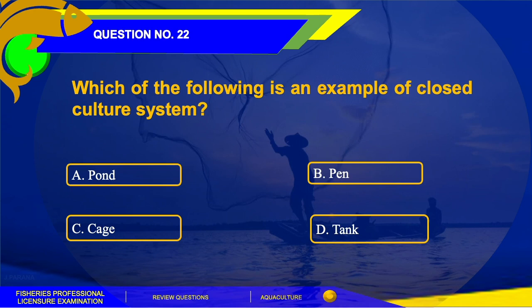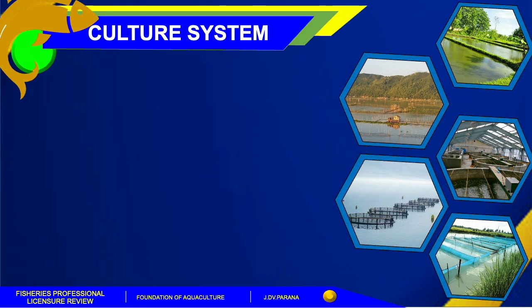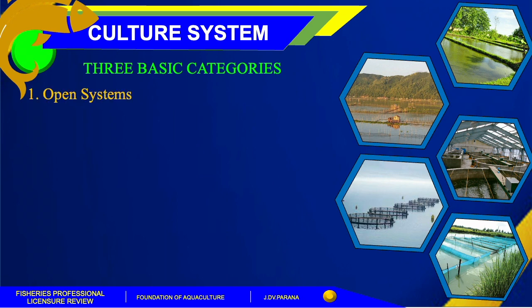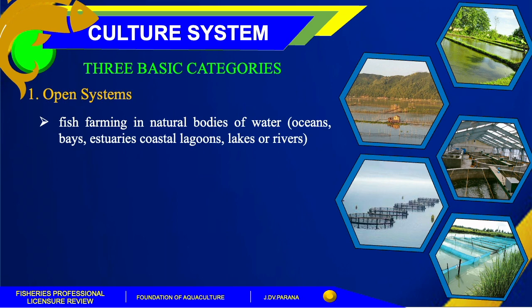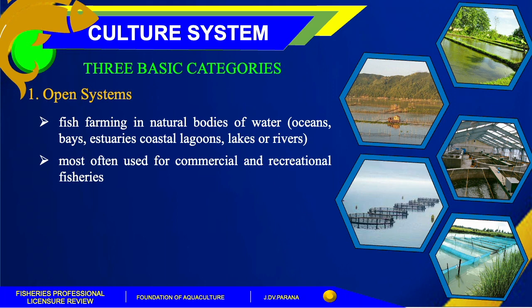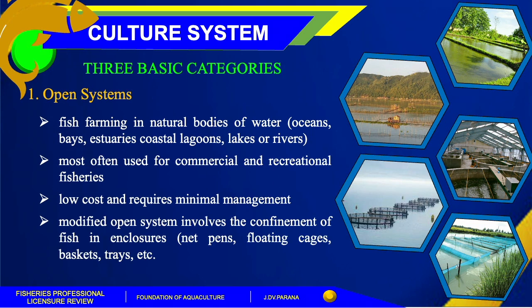The answer for this question is letter D, tank. Basically, there are three categories of culture systems. The first is the open system, which involves farming in natural bodies of water such as oceans, bays, estuaries, coastal lagoons, rivers, or lakes. It is most often used for commercial and recreational fisheries, is low cost, and requires minimal management. The modified open system involves the confinement of fish in enclosures such as net pens, floating cages, baskets, and trays.